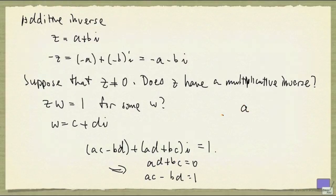And if you go through the calculations, you will see that c has to be a over a squared plus b squared, and d to be minus b over a squared plus b squared. And I ask you to verify that if w is given by c plus di, where c and d are given by these, then z times w is indeed 1.